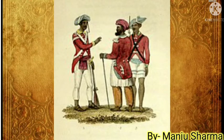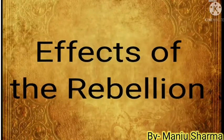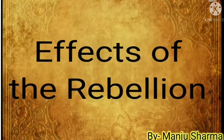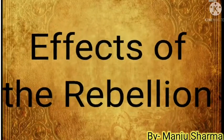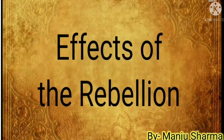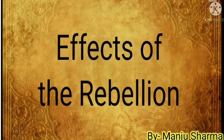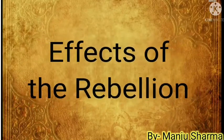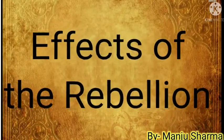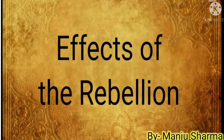The effects of the rebellion: The rule of the East India Company came to an end after 1857. The Governor-General was given the title of Viceroy. The policy of annexation was given up. The Queen promised not to interfere in the social and religious practices of Indians. The army was reorganized to prevent further rebellion. Zamindars and landlords were given their rights back in order to win their support and loyalty.